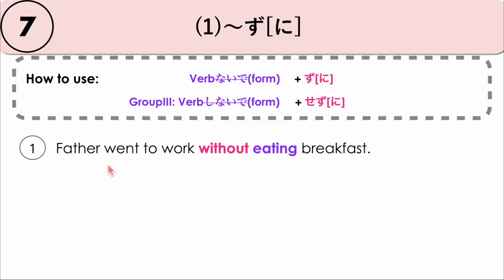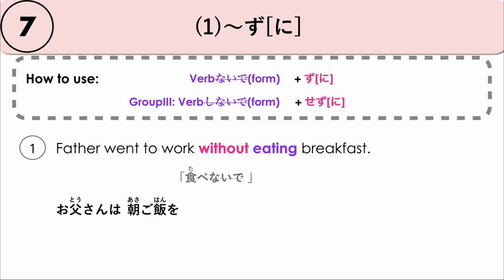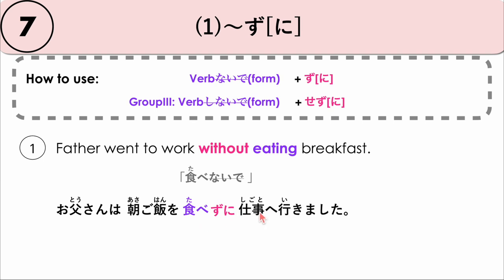Here are some examples on how to use this grammar point. First example: Father went to work without eating breakfast. We say: O tousan wa, asa gohan wo — our verb is to eat, or not to eat — tabe naide, without eating. We change it to tabe zu ni, removing naide and replacing it with zu ni. O tousan wa, asa gohan wo, tabe zu ni, shigoto e ikimashita.